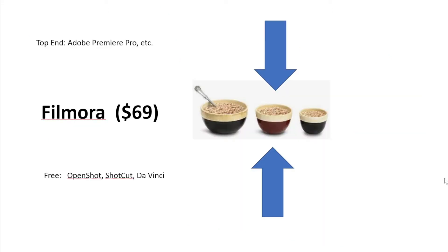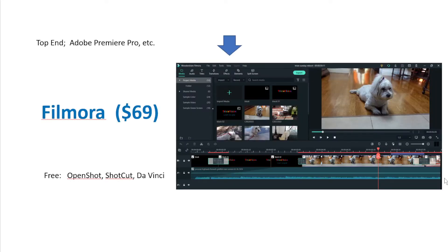Filmora is a mid-level video editing program — just like Goldilocks and the Three Bowls of Porridge. You can find free programs like OpenShot and Shotcut, or spend $400 or $500 on high-end programs, and Filmora falls in the middle. Basically all these video editors are about the same: you've got a box where you drag your clips, a preview of the film you're building, and clips, transitions, and an audio track in a timeline.